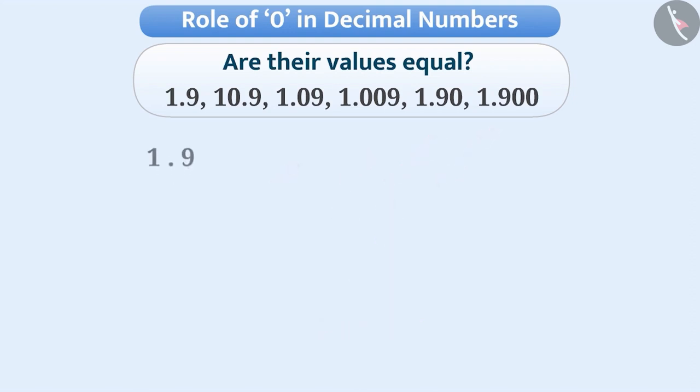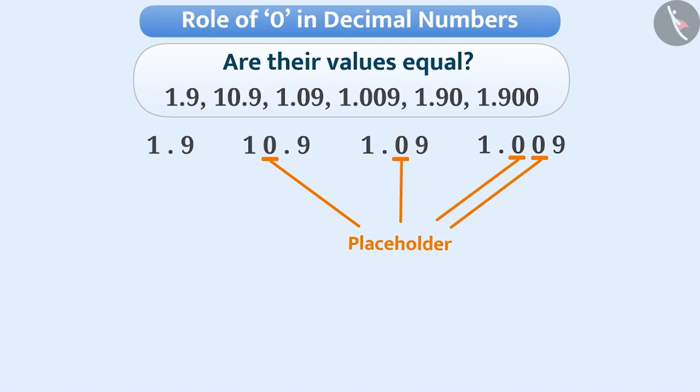For example, numbers like 1.9, 10.9, 1.09, 1.009, etc. seem to be similar. But zero holds the rest of the digits at their correct places so as to ensure that their values are correct.